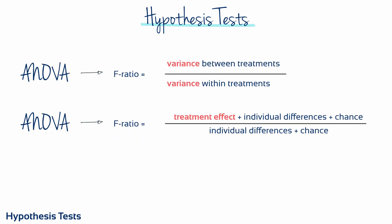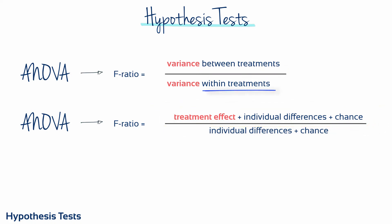The F-ratio is really just comparing the variance between treatment groups with the variance within those groups. The variance between treatment groups is composed of the differences due to the treatment effect of the independent variable being manipulated, as well as the individual differences of the study participants and differences due to chance. Whereas the variance within treatment groups is made up of just the individual differences of the study participants and those due to chance.